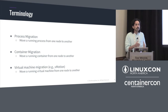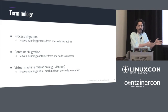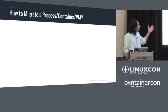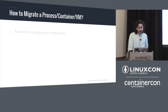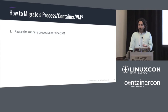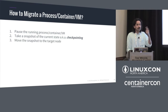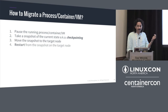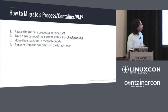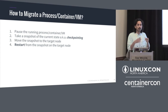In all these cases, the key point is that the process, container, or virtual machine was running before, and after migration it continues to run. Here is a general recipe: first, pause the running process or container so the state is now immutable; take a snapshot of the current state; copy the snapshot to the target node; and finally restart from that snapshot. Taking the snapshot is called checkpointing or snapshotting, and the restart part is just called restart.